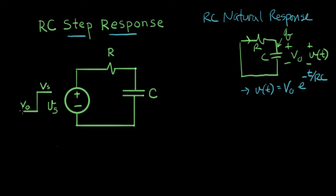So Vs starts at some voltage V naught, then at time zero it makes a sharp step up to some other voltage Vs. What we want to do is see what this circuit does — we want to find V(t). Before T equals zero, the circuit will be in some state, then we disturb the circuit and it settles down into some new state. That's going to be called the step response of the circuit.